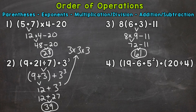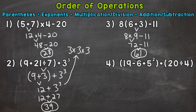On to number 4, where we have parentheses 19 minus 6 plus 5 squared, end parentheses, plus parentheses 20 divided by 4, end parentheses. Do we have any parentheses? Yes, we have two sets of parentheses. Let's just work our way from left to right — starting with the set on the left where we have 19 minus 6 plus 5 squared. We have subtraction, addition, and an exponent there. Any parentheses in the parentheses? No. Any exponents? Yes. We have 5 squared, which is not 10 — it doesn't mean 5 times 2, it means 5 times 5.